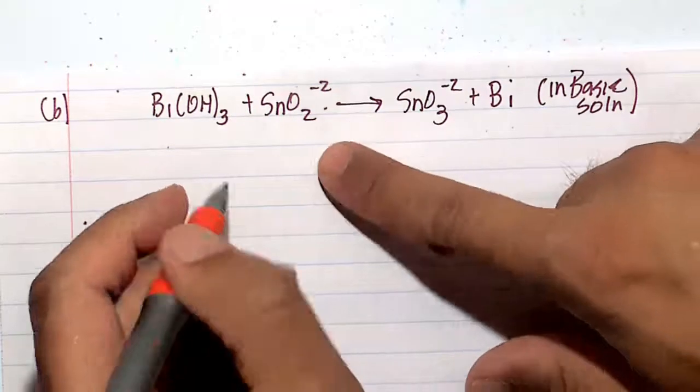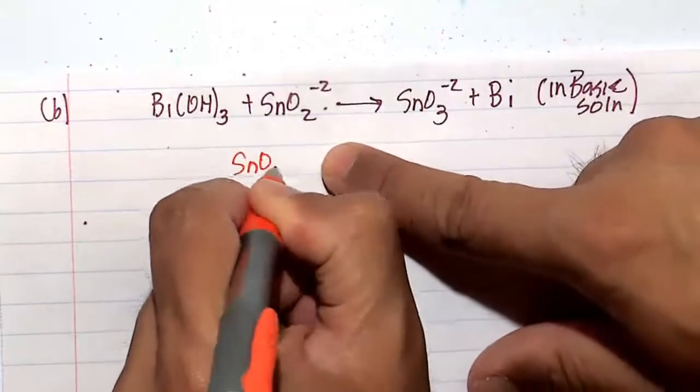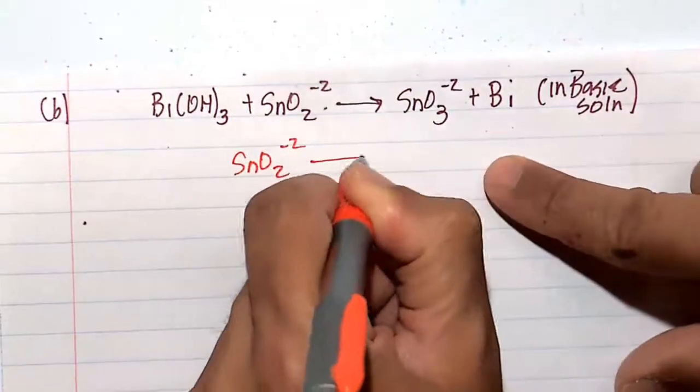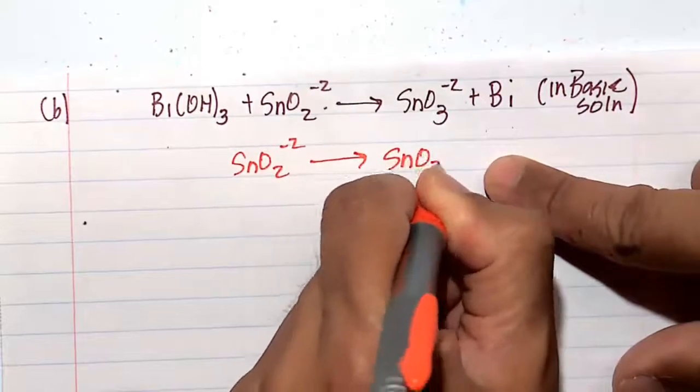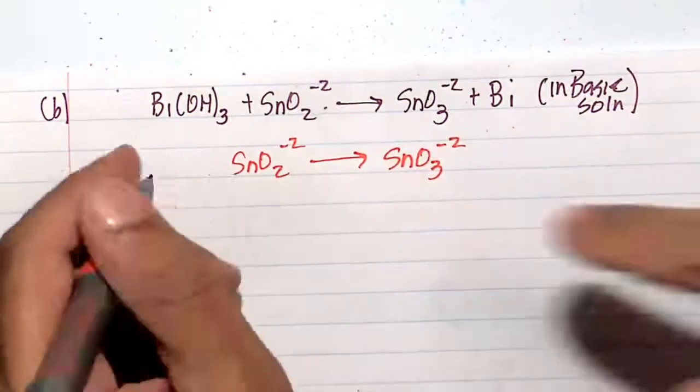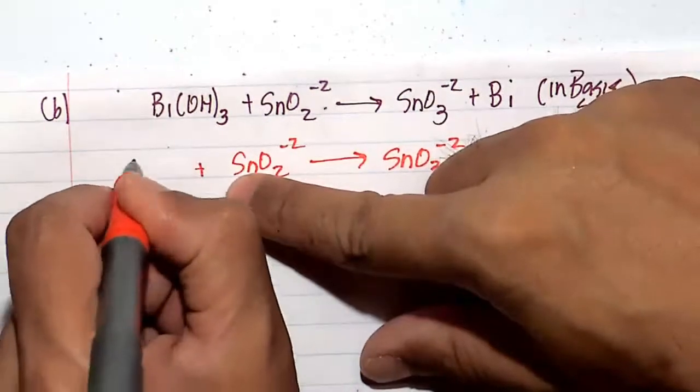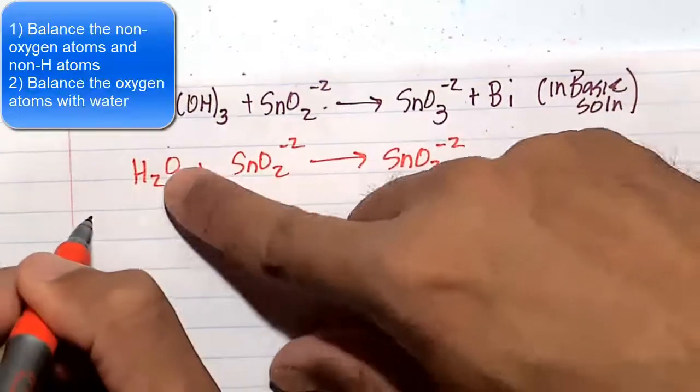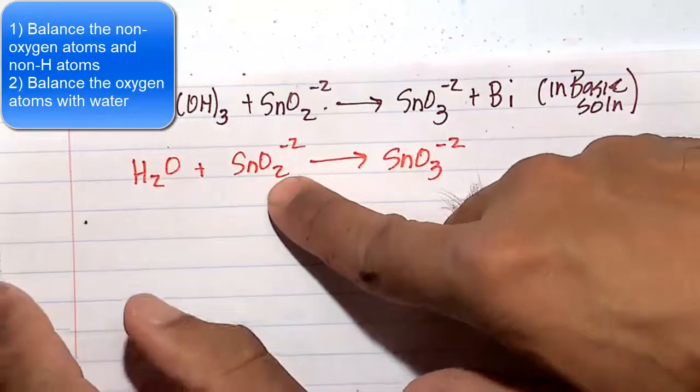So first thing here, I see SnO2 minus 2 going to SnO3 minus 2. Sn's are fine. We have three oxygens. I'm going to balance that oxygen with a water here. So one oxygen plus two oxygens is three oxygens.